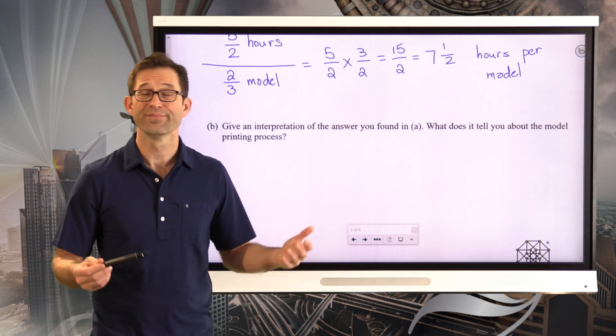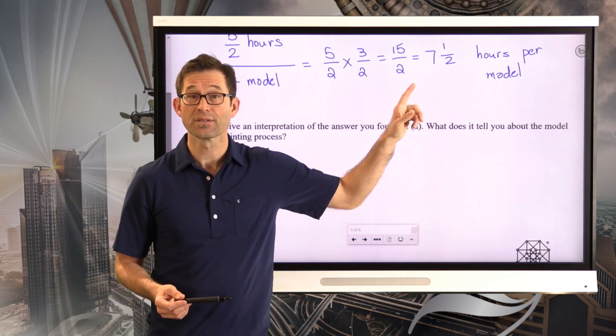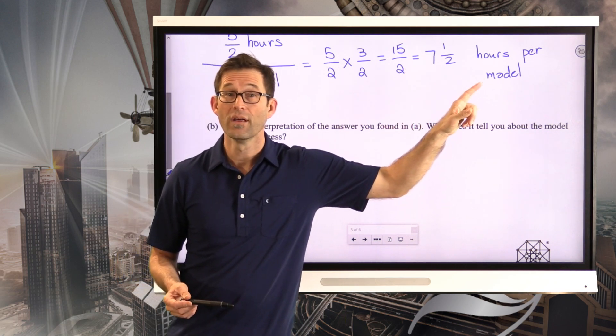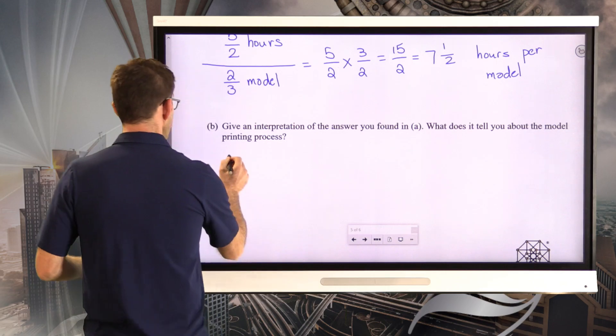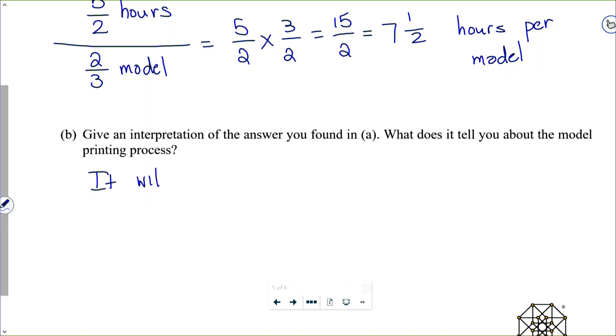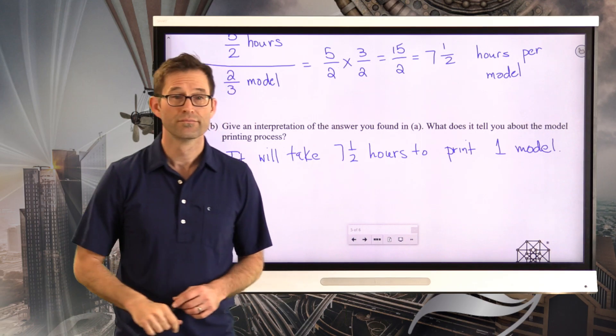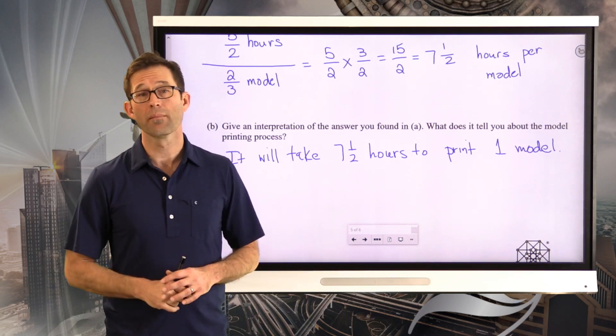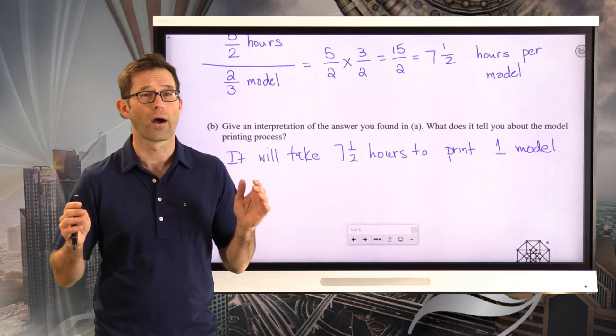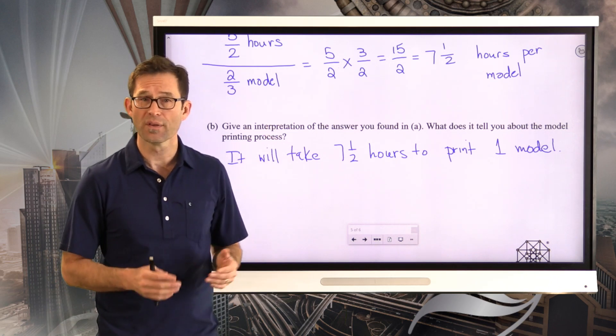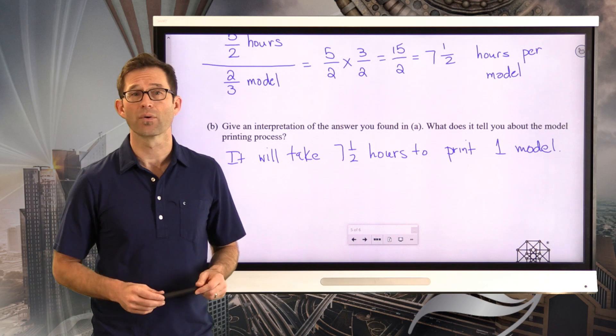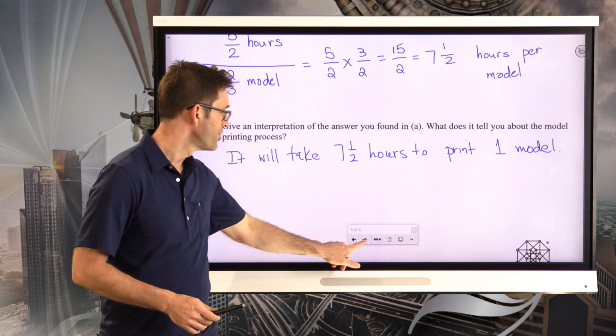Well, the whole point of the unit rate, the whole point of it, is to tell you how long, in this case, it will take for one thing. So what does our answer tell us? It tells us it will take seven and one half hours to print one model. That's it. And again, that's the wonderful thing about unit rates is that they tell us how long or how much or how far per one of something. In this case, one model takes seven and a half hours. Awesome. Let's wrap this up.